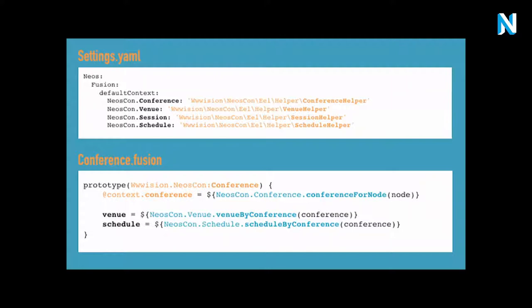The last step is we make these services available in Fusion, so we can use them in Fusion prototypes like this. In your Fluid templates, you never really work with nodes, but just work with these custom view models. I know some of you prefer to have more control in Fusion, and that's totally fine as long as you follow best practices — just keep it centralized, keep it on one level of abstraction, create components. I'm just more the PHP kind of guy, and I like to have the core domain in PHP because I think it's easier to test.